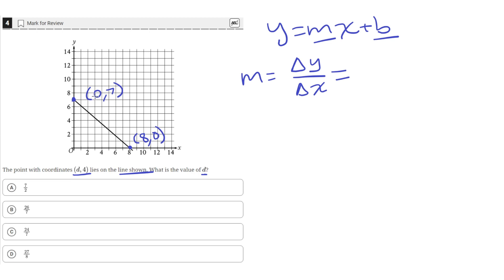So the change in y is going from 7 to 0, so 0 minus 7 is the change in y, and then x is going from 0 to 8, so 8 minus 0 is the change in x. So this is just equal to negative 7 over 8, which is just negative 7 eighths. So that's the slope of our line.